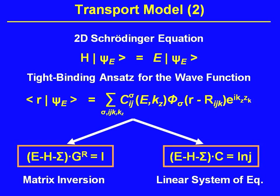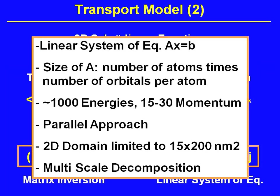The Hamiltonian is spatially represented in a tight binding description, where each hopping matrix element from one site to the next is represented, and we compute wave functions in the system. We need to solve a linear system of equations Ax = b, where the size of A is the number of atoms times the number of orbitals per atom. We have about a thousand energies to compute, about thirteen to fifteen momenta, and we use a parallel approach.